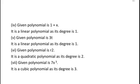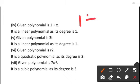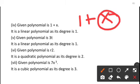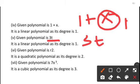The next question is 1 + x. Here there is only one variable and its degree is 1, therefore it is a linear polynomial. The next question is 3t. Since t has degree 1, it is also a linear polynomial.